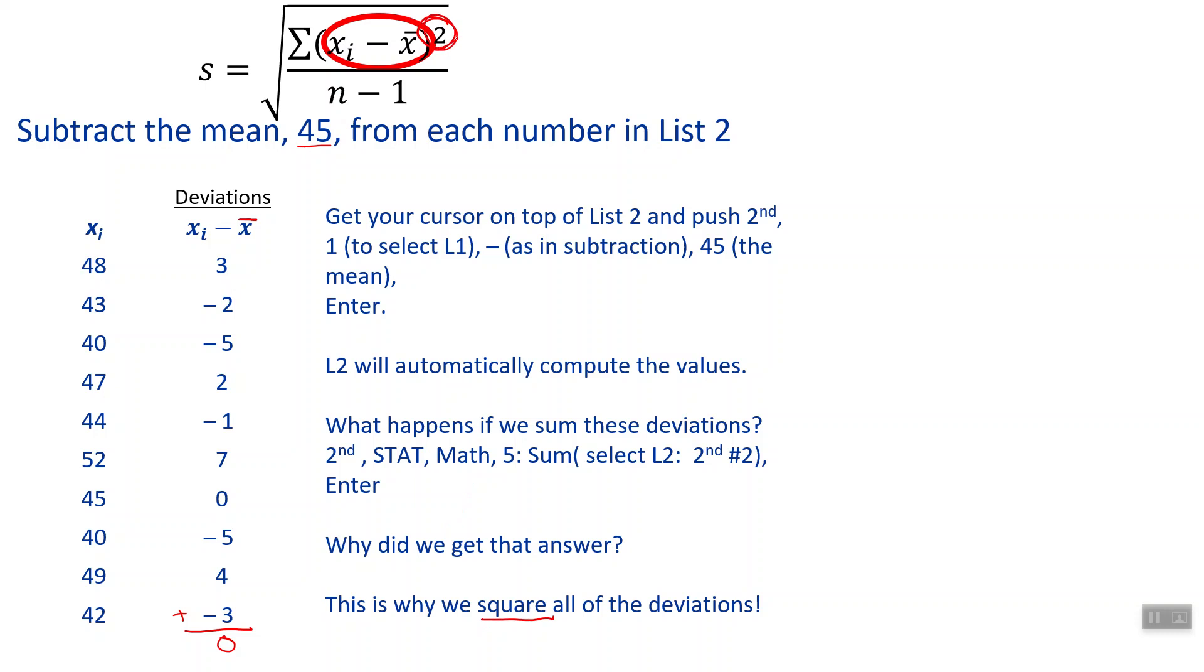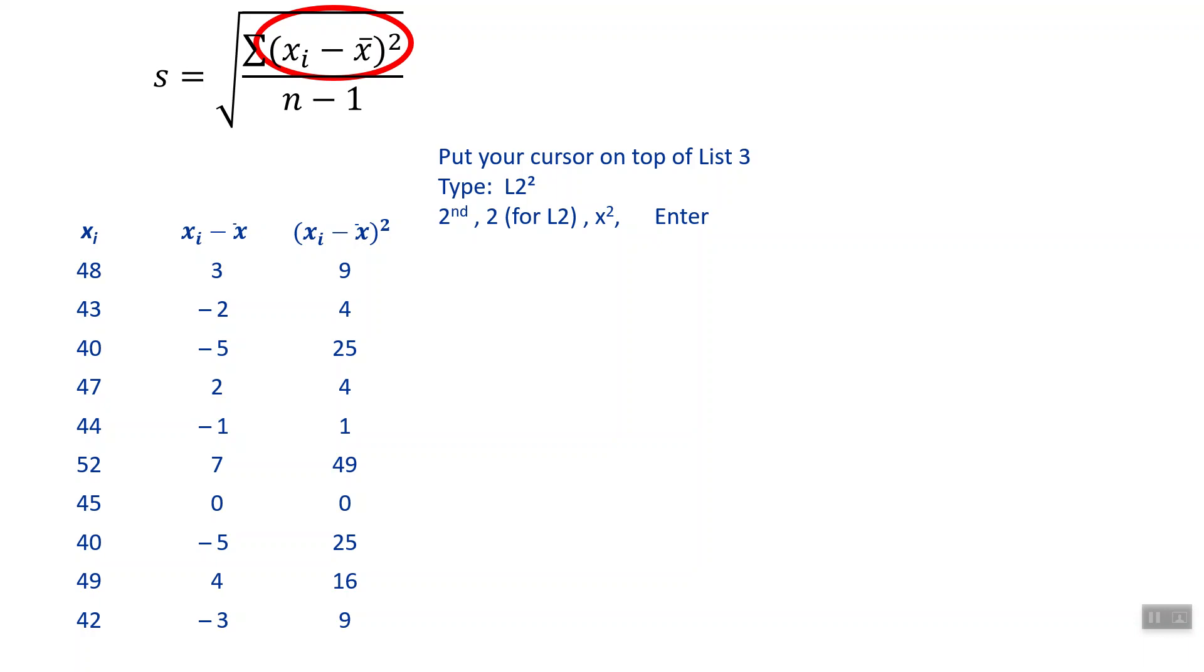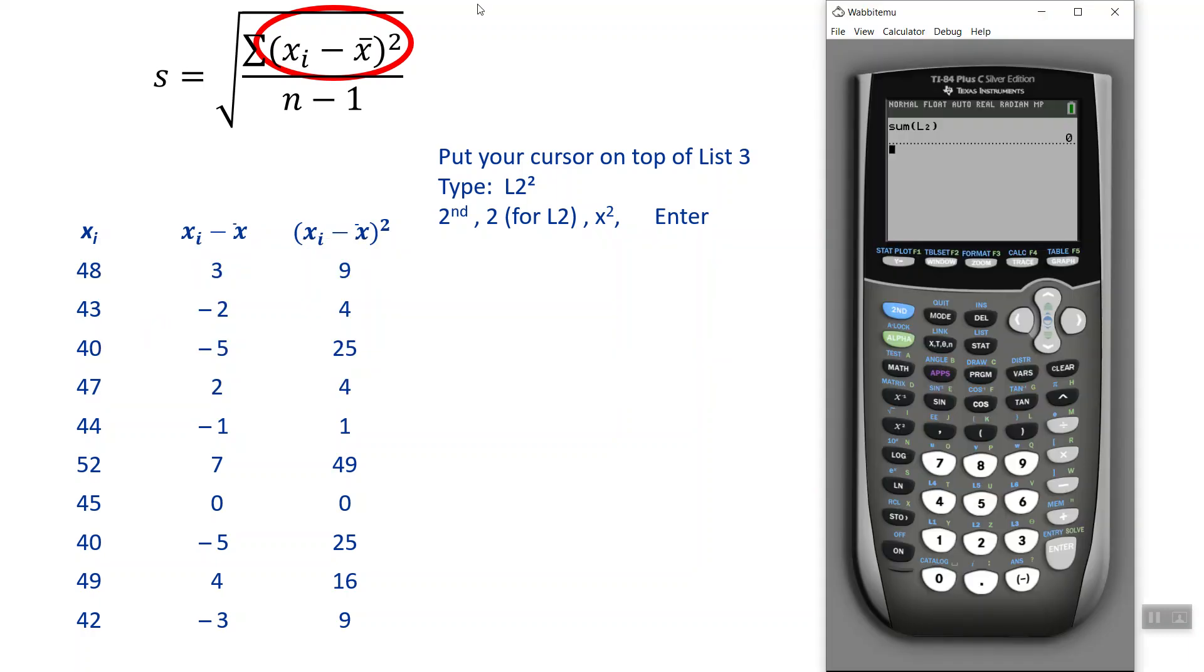This is why we have to square them all. The way we can square them all real quick and easy is we can make an L3 with everything squared. Go back to edit, go over to L3 up to the top, and we want to square everything in L2. So we type L2, press the X squared button, and press enter. There's all of the deviations squared.